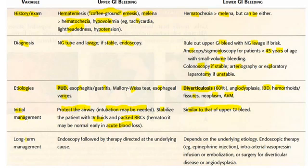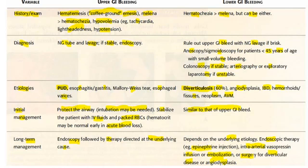For long-term treatment, do endoscopy followed by therapy directed at the underlying cause. For lower GI bleed, treatment depends on the underlying etiology. Options include endoscopic therapy with epinephrine injection, intra-arterial vasopressin to cause vasoconstriction, embolization, and surgery in the case of diverticular disease or angiodysplasia.